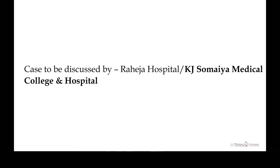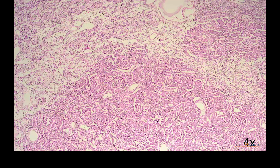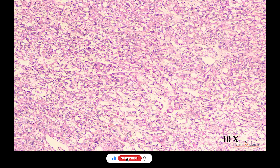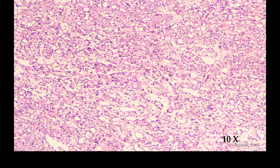At places, or focally, the tumor had a solid pattern due to fusion of the papillae. On high power, the individual papillae were lined by a single type of cuboidal epithelium with a centrally placed nucleus. The nucleus is vesicular. The cells have a very distinct cell border and moderate eosinophilic to clear cytoplasm.